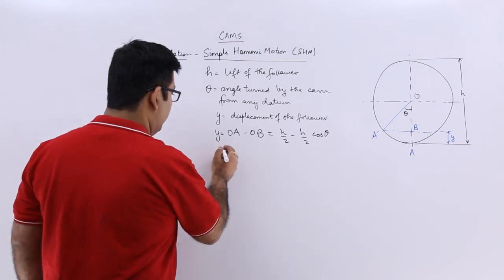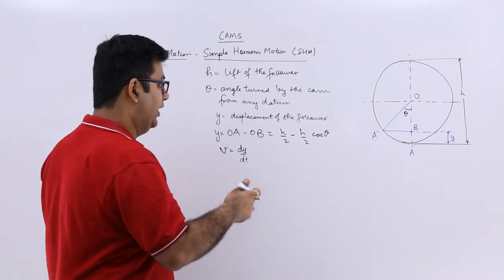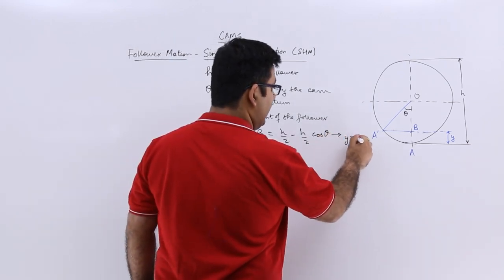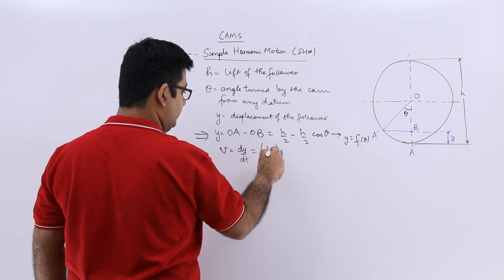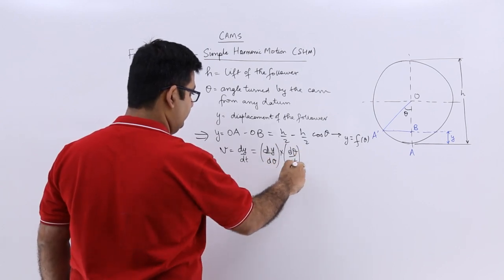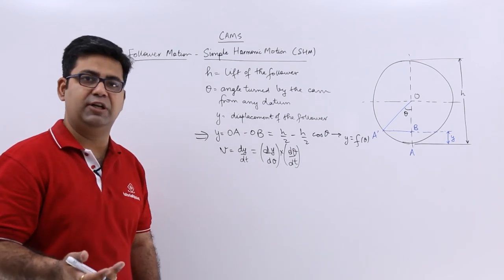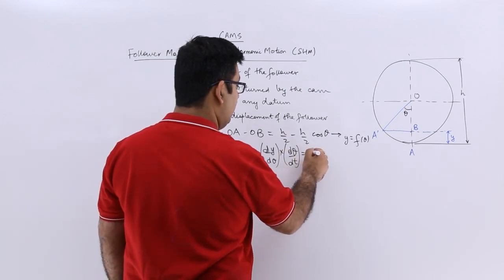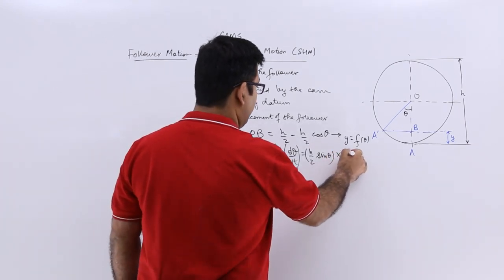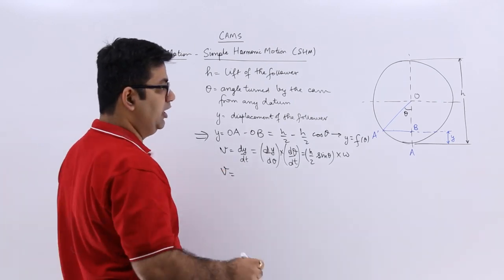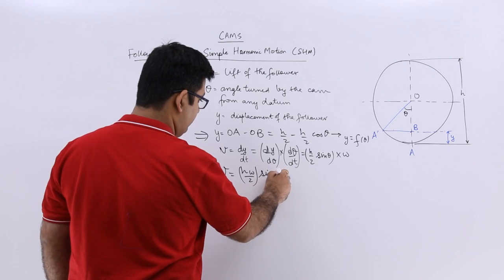So if I have to find out the velocity of the follower, it will be dy upon dt. Now if we know y is a function of theta from this equation, that is y is equal to f of theta, I can divide and multiply by theta — this will be d theta upon dt. Now dy by d theta: h by 2 is a constant, so the differential of cos theta would be minus sin theta, and you already have a minus over here, giving h by 2 into sin theta. Now d theta by dt is the angular velocity, so you get omega.